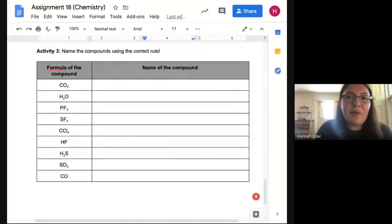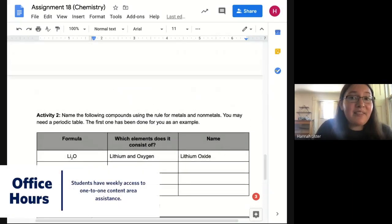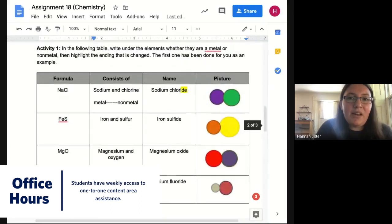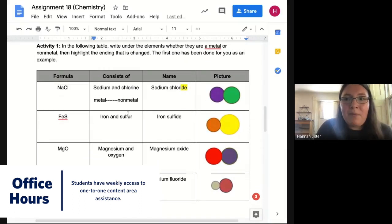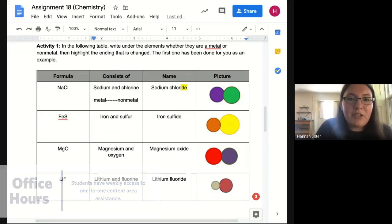All right. And then activity three is just going to be you naming the compounds. So I give you compounds here. And you're going to write the name again using the correct rule from the Google Slides presentation in your two column notes. And if you get stuck or if you need extra support, let me know. And I would be happy to meet with you. But we will also definitely go over this on Thursday to make sure that we're all on the same page.